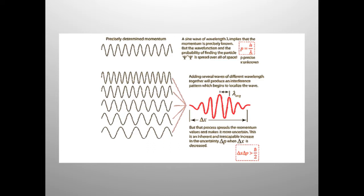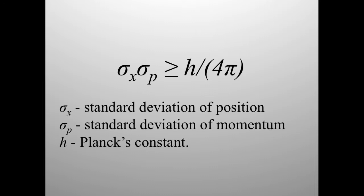A pure sine wave that repeats endlessly has only one wavelength, but it covers an infinite region. As a matter wave, this would be a perfect specification of momentum with no specification of position. A highly localized pulse is confined to a small region but requires multiple wavelengths, so its momentum is much less precise. The limit of this simultaneous specification is given by: σ_x × σ_p ≥ h/4π, where σ_x is the standard deviation of position, σ_p is the standard deviation of momentum, and h is Planck's constant. This is a consequence of the wave nature of matter.